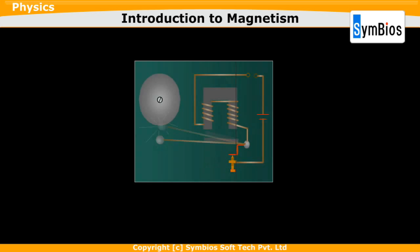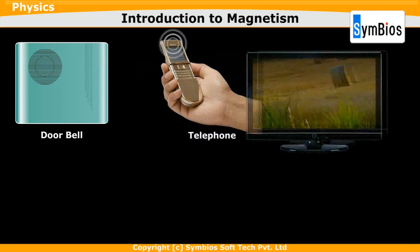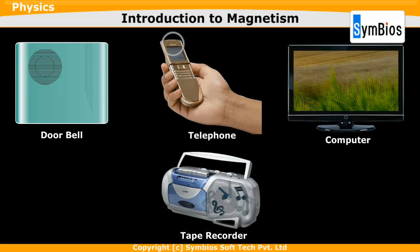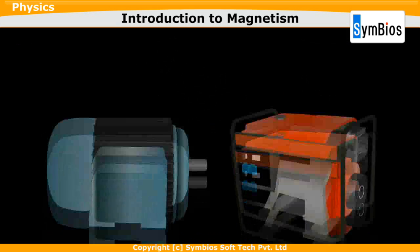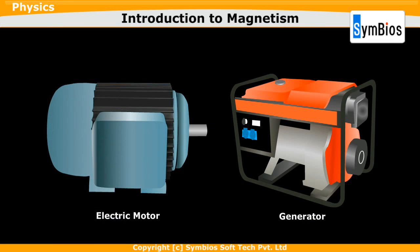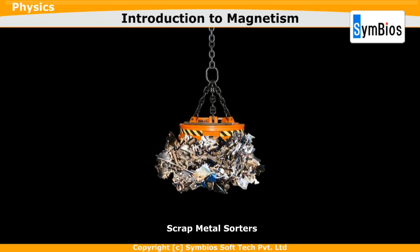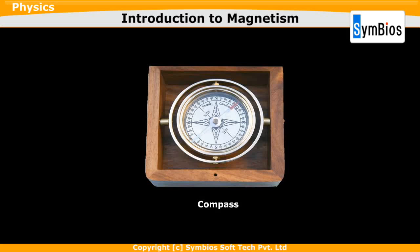Magnets are used in many home appliances like doorbells, telephones, computers, tape recorders, etc. Magnets are used in electric motors and generators. Magnets are used by scrap metal sorters to separate metal, and magnets are used in compasses.